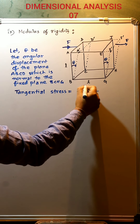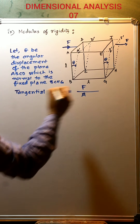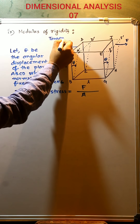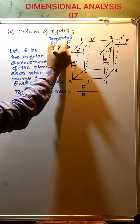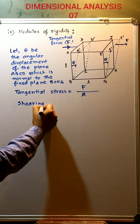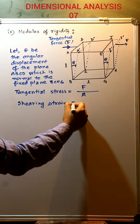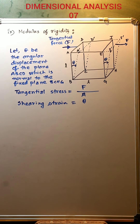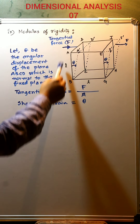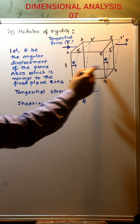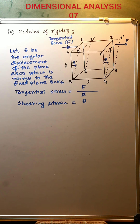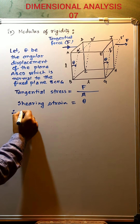Tangential stress is the ratio of tangential force F to the area of cross section A of each plane. Shearing strain is equivalent to the angular displacement theta — the angular displacement of the plane ABCD due to the application of the tangential force. That plane ABCD is perpendicular to the fixed plane BCHG. So theta is the angular displacement of a plane perpendicular to the fixed plane BCHG due to the tangential force.